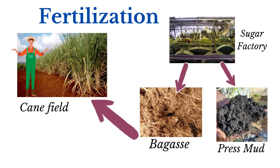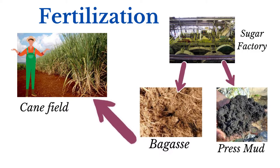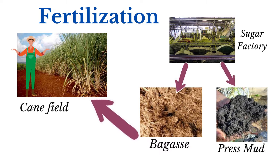One of the advantages of ratooning is that it does not pull out all of the nutrients from the soil each time the crop is harvested. Nevertheless, the more the soil is cultivated, the more it loses nutrients and becomes depleted, making it necessary for fertilizers to be used to replenish the soil.